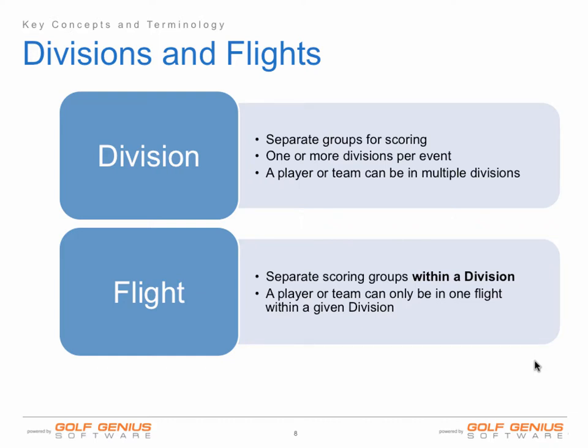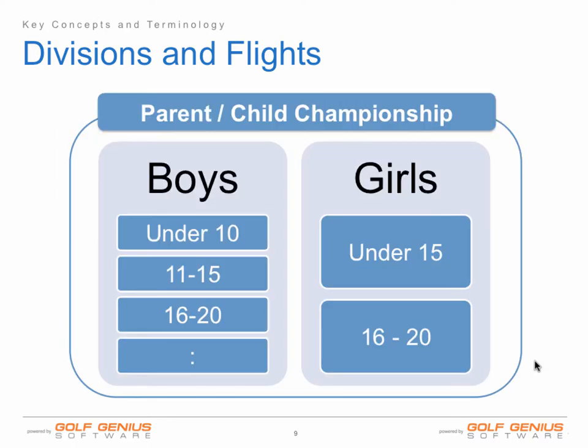So in summary, an event or league can have one or more divisions, and in each division there may be a group of flights, which are also used for scoring. Here's an example. As you'll see, there are two divisions — a boys' division and a girls' division — separating the group of players in this parent-child championship event. Within each division, you'll see there are multiple flights. In the boys' division, there are four flights, so the leaderboard will be separated by four different flights of scoring, and the girls have two flights.